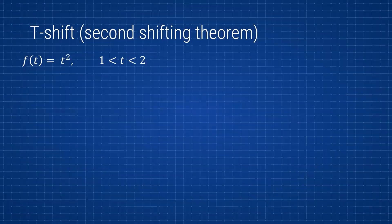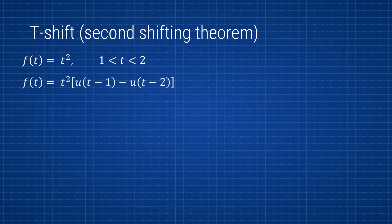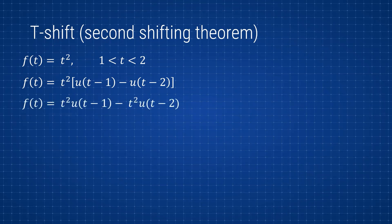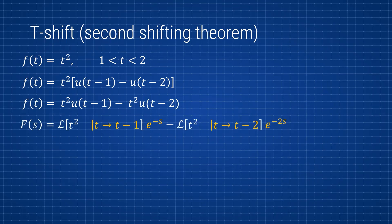Let's look at an example. The original function is t² and it exists between 1 and 2. If given something like this, you write it as t² times u(t - 1) minus u(t - 2). After distributing t², we get t²·u(t - 1) minus t²·u(t - 2). Now we apply the t-shift: for the first term we shift all t's to (t - 1), which gives a corresponding exponential e^(-s); for the second term we shift all t's to (t - 2), giving e^(-2s).